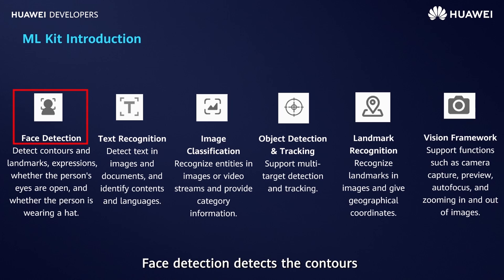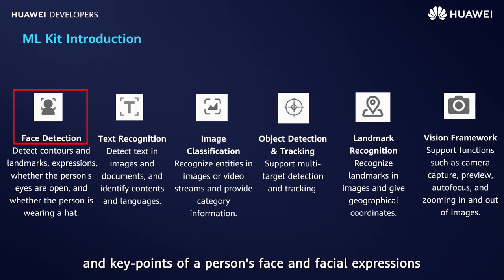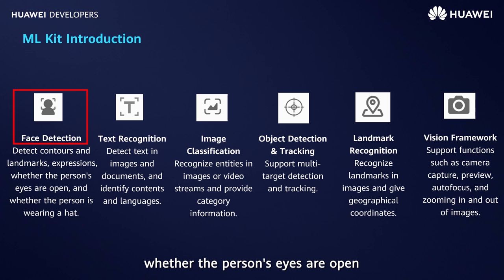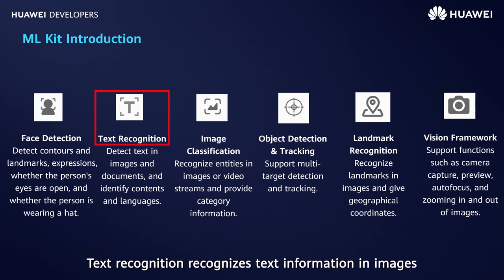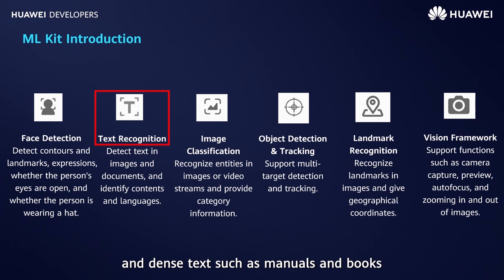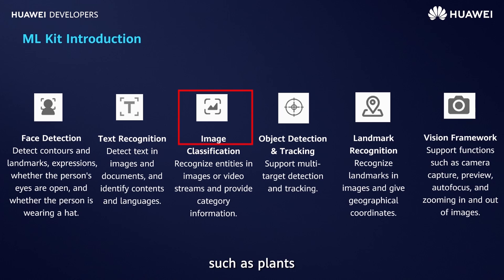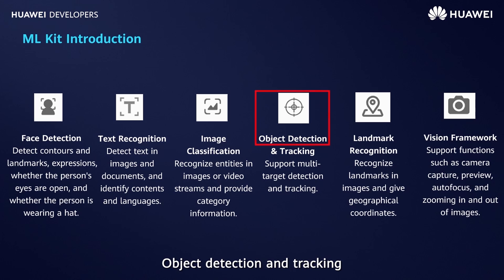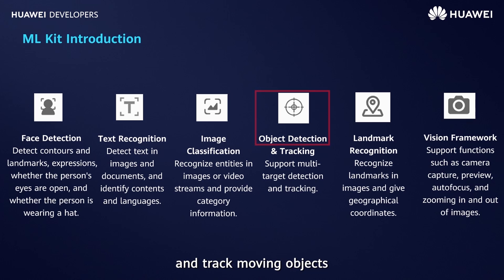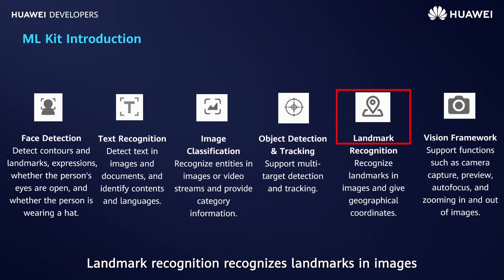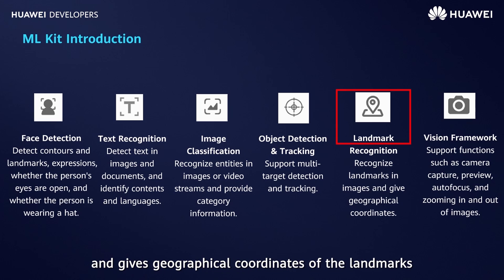Face detection detects the contours and key points of a person's face and facial expressions, whether the person's eyes are open, and whether the person is wearing a hat. Text recognition recognizes text information in images, including sparse text such as ID cards and business cards, and dense text such as manuals and books. Image classification recognizes various labels in images, such as plants, people, and buildings.